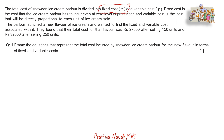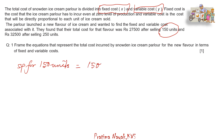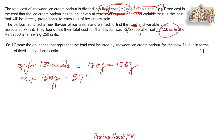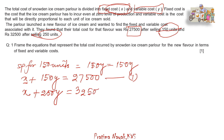Fixed cost is X and variable cost is Y. He is selling 150 units, so for 150 units the variable cost will be 150Y, because the cost per unit is Y. So variable cost plus fixed cost gives the total — so X plus 150Y is equal to 27,500. This is the first equation. Similarly, for the second equation with 250 units: X plus 250Y is equal to 32,500. This is equation 2.